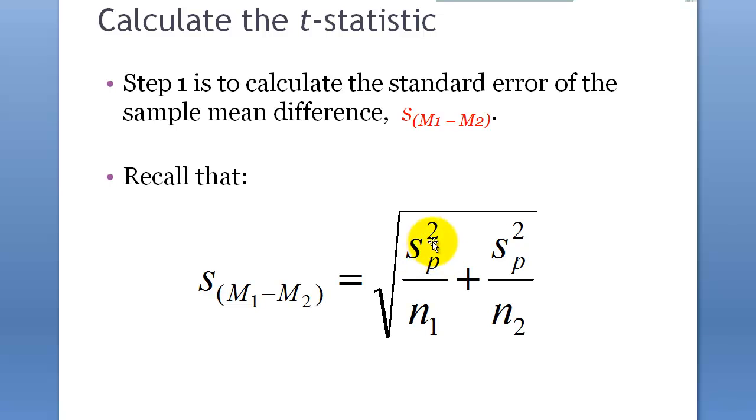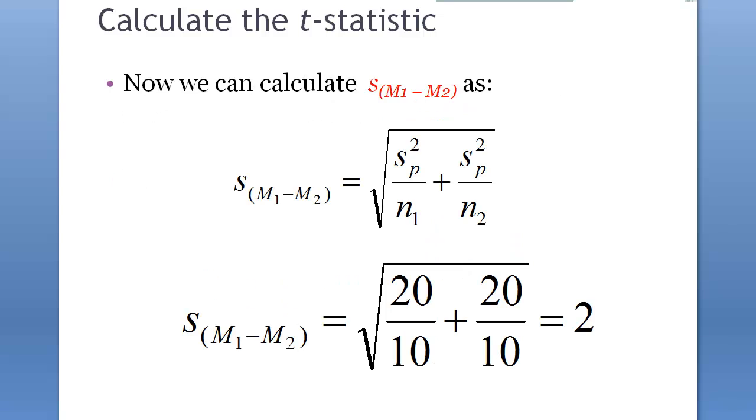So that's how we get the value for pooled sample variance, so it's 20 and 20. And sample size for sample one is 10, and sample size for sample two is 10. So two plus two equals, square root of four is two, that's how we got standard error of mean difference.